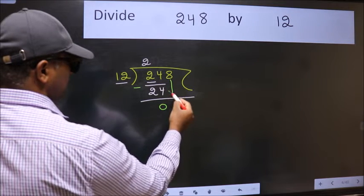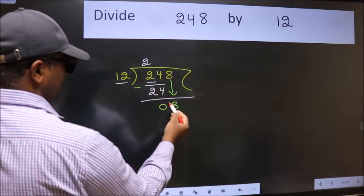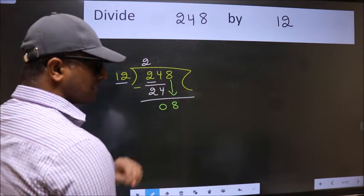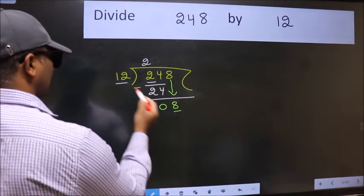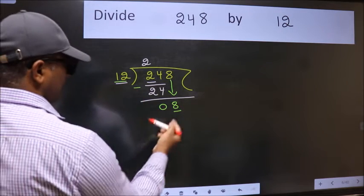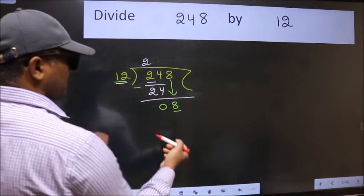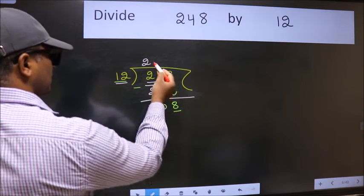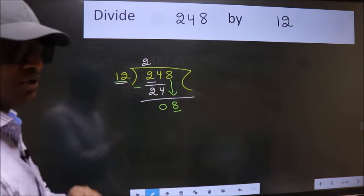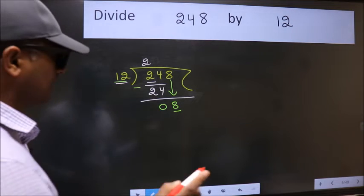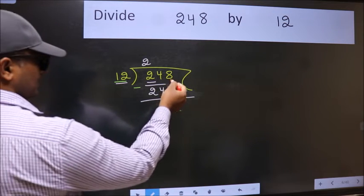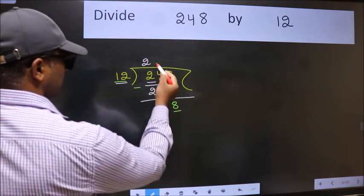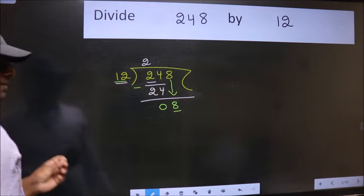After this, bring down the beside number. So 8 down. After this step, the mistake happens and the mistake is this: Here we have 8 and here 12. 8 is smaller than 12. So what many do is they directly put dot take 0, which is wrong. Why is it wrong? Because just now you brought this number down and in the same step you want to put dot take 0, which is wrong.